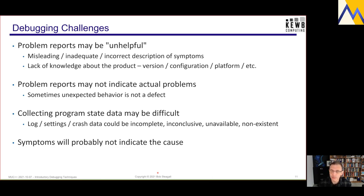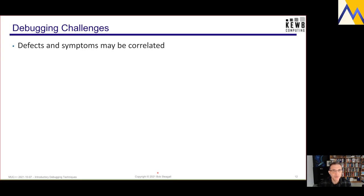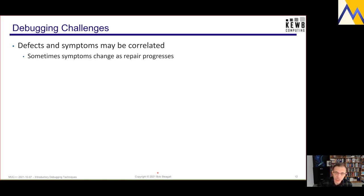The symptoms will very likely not indicate the cause. In any large, non-trivial, complex system, the cause and effect are typically distant in time and space — distant in terms of lines of code apart from each other, and in terms of the time at which a defect occurs relative to when a symptom is observed. The defects and the symptoms may be correlated: as you're in the midst of a repair, the symptoms will change and you need to re-evaluate what you've done. Perhaps by fixing some portion, previously latent defects become apparent.